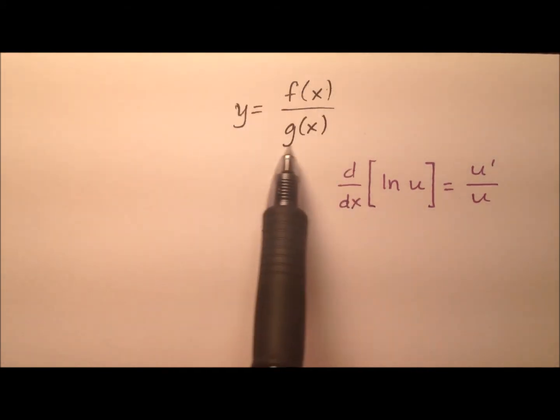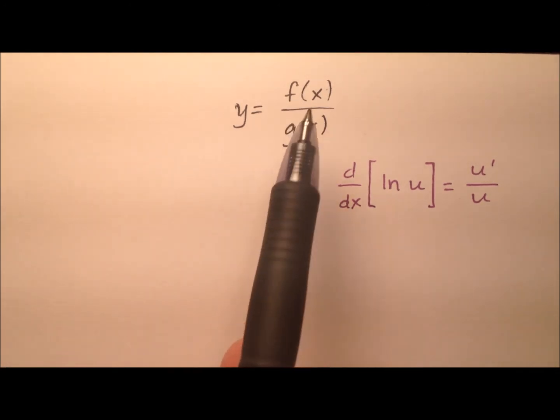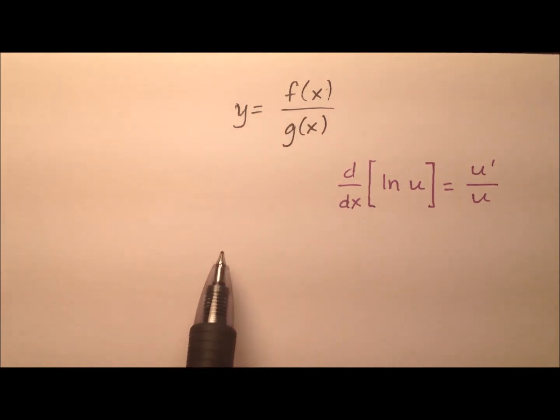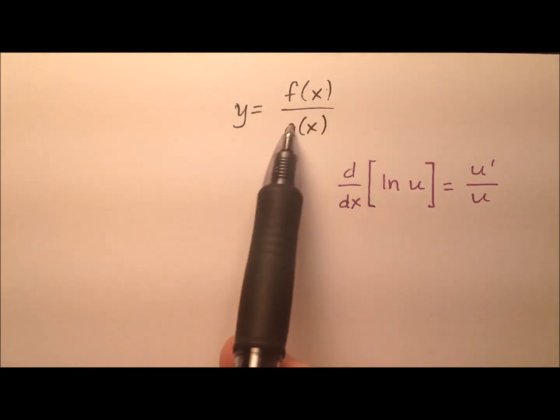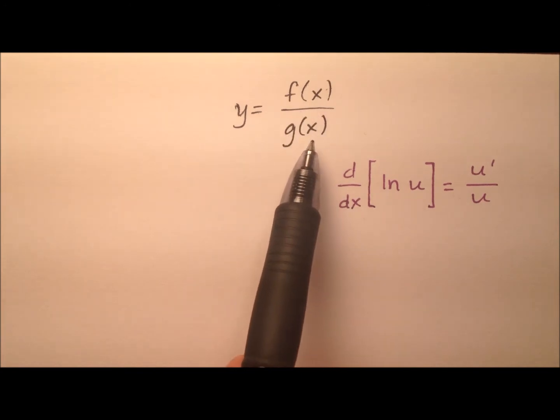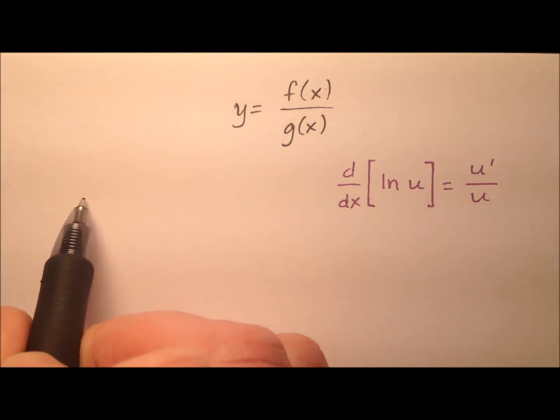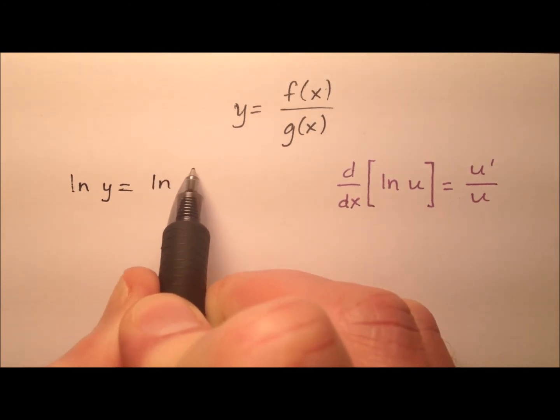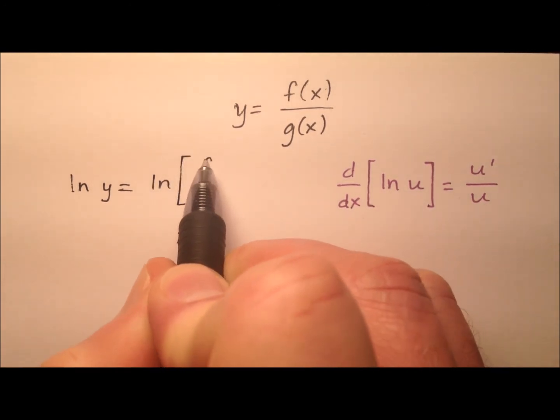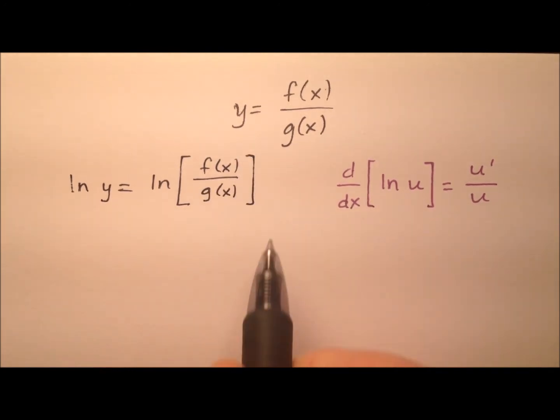So for this logarithmic differentiation, the first thing I'm going to do is go ahead and take the natural log of both sides of this equation, and I'll be doing this so instead of having a quotient or instead of having the division of two functions, I'm actually going to write them as the subtraction of two distinct terms. So let's go ahead and see what that might look like. So the natural log of y equals the natural log of, and then of course we have this quotient here, this f of x divided by g of x.